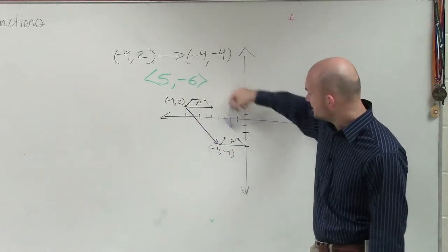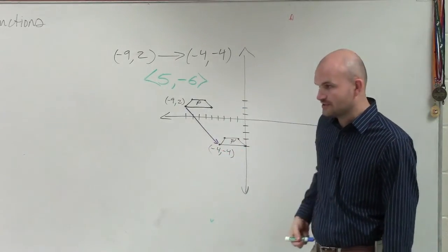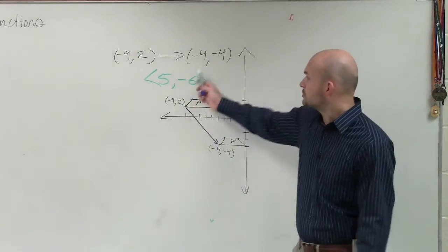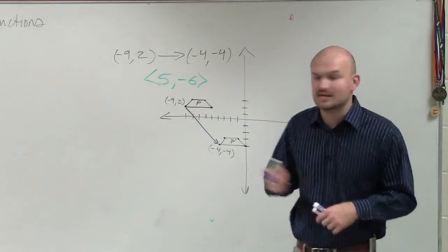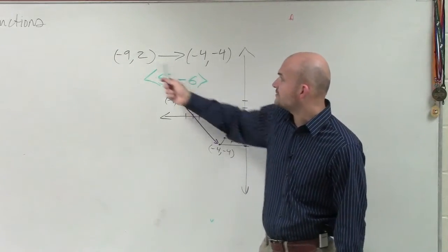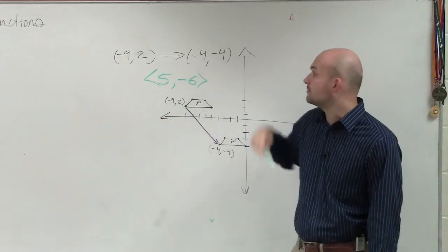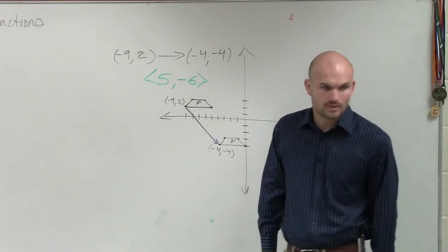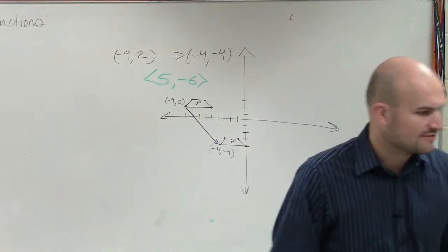And you guys can see that, is this going to be consistent for all these points? Yes, it will. So the transformation vector is 5, negative 6. Because when I add 5 to negative 9, and when I add negative 6 to 2, I get my new point, which is negative 4, negative 4. And so that's how you find the transformation vector.